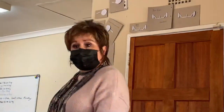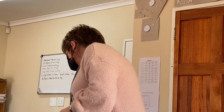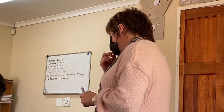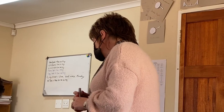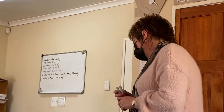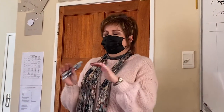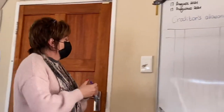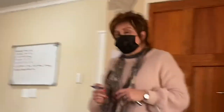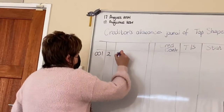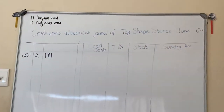It is a creditors allowances journal of Top Shape Stores for the month of June. Remember it's not just all the transactions they give us that have to go in there - you've got to go and read first. First transaction: merchandise to the value of 180 rand and incorrect stationery worth 40 rand was returned to Mchisi Suppliers as it was not according to sample. Debit note 001 was issued - your keyword is 'debit note', so debit note is 001. This happens on the second and I'm returning it to Mchisi Suppliers.